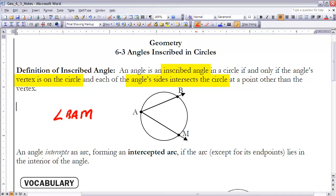Notice how the vertex A is on the circle and both B and M are also on the circle and not at point A. This takes the circle and divides it into two arcs really - this major arc BAM going all the way around and the minor arc BM. An angle intercepts an arc, forming an intercepted arc. This arc BM is the intercepted arc if the arc except for its endpoints lies in the interior of the angle. Notice how this arc BM here is completely inside of the angle BAM.